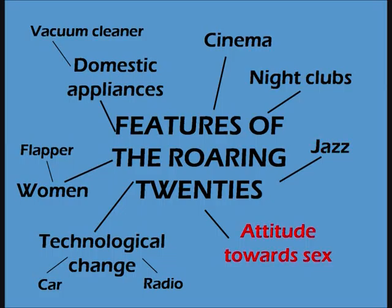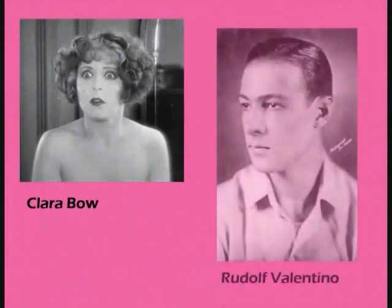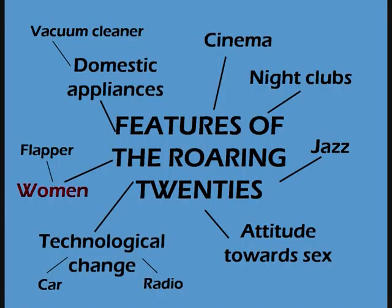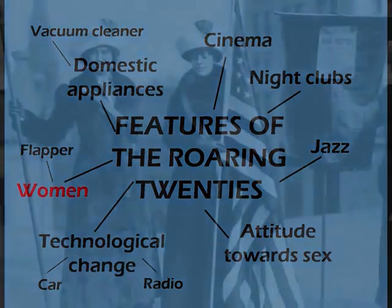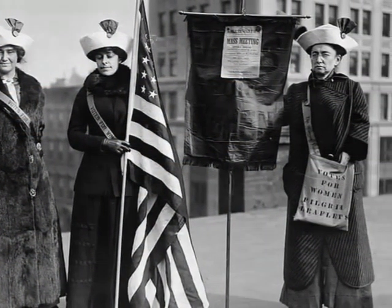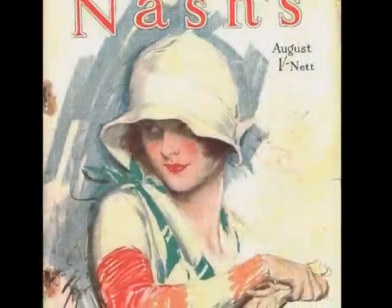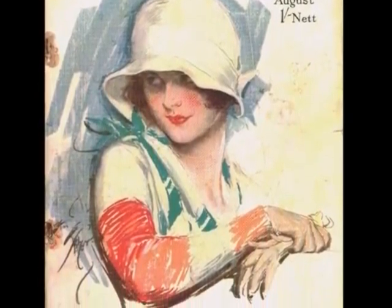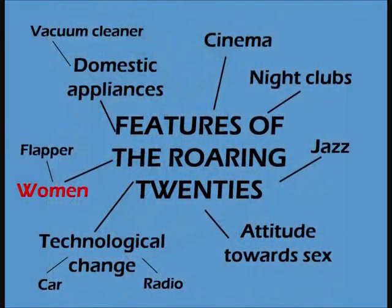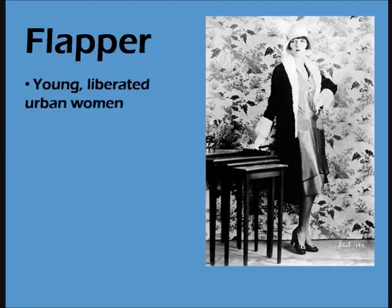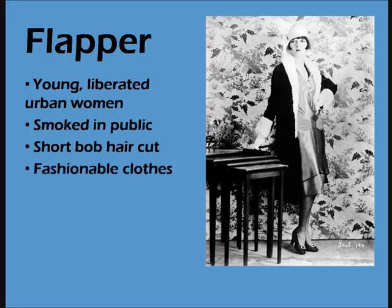Attitudes towards sex became more liberal with recognised sex symbols such as Clara Bow and Rudolf Valentino. Women in this period began gaining more freedoms. In 1920, they had been given the vote. During the war, women had proved they were capable of working in factories like men. Domestic appliances shortened the amount of time needed on housework. Women began to be targeted in advertising campaigns that recognised the influence and potential of this demographic. New, inexpensive clothes and make-up helped define the flapper — young, liberated, urban women who smoked in public, tended to have short bobbed haircuts and wore short skirts. Now please note: they were not prostitutes. Do not make that simple, glaring mistake in your exams by referring to them as such.